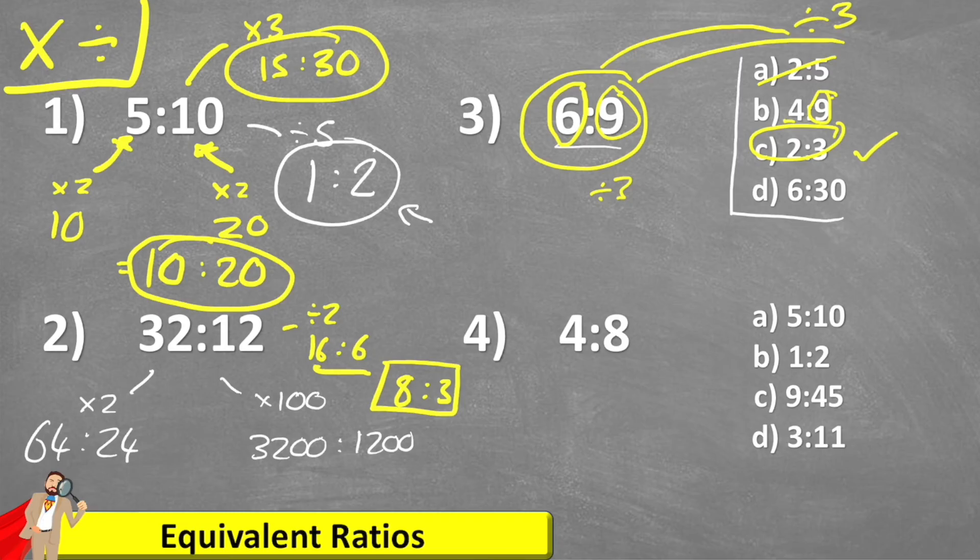What about six to 30? Well, for exactly the same reason as B, can't be because we've got a six at the start and a different number at the end. Not equivalent.